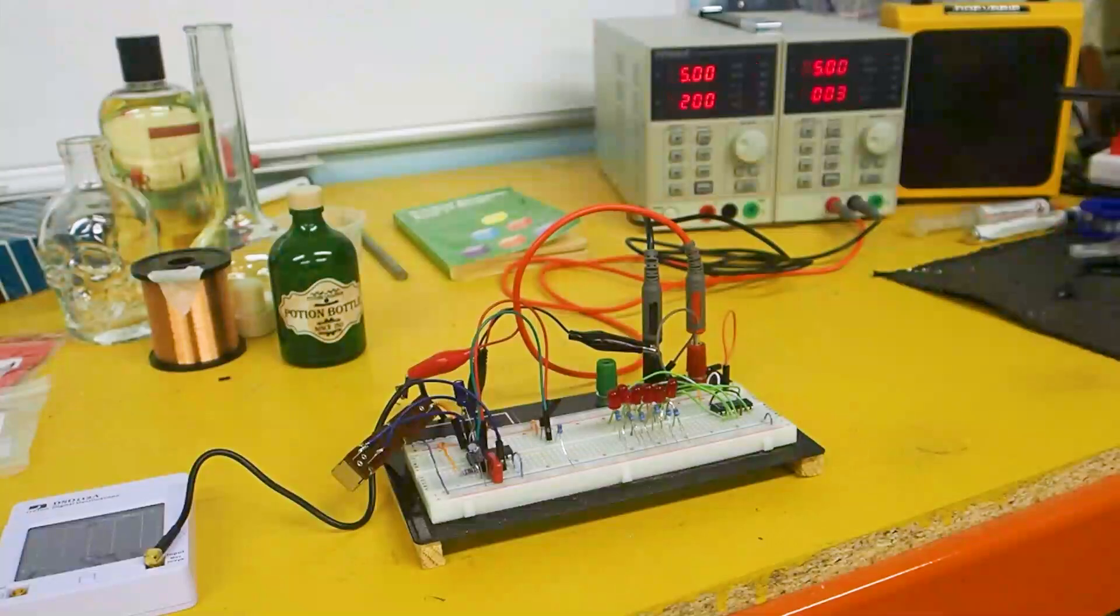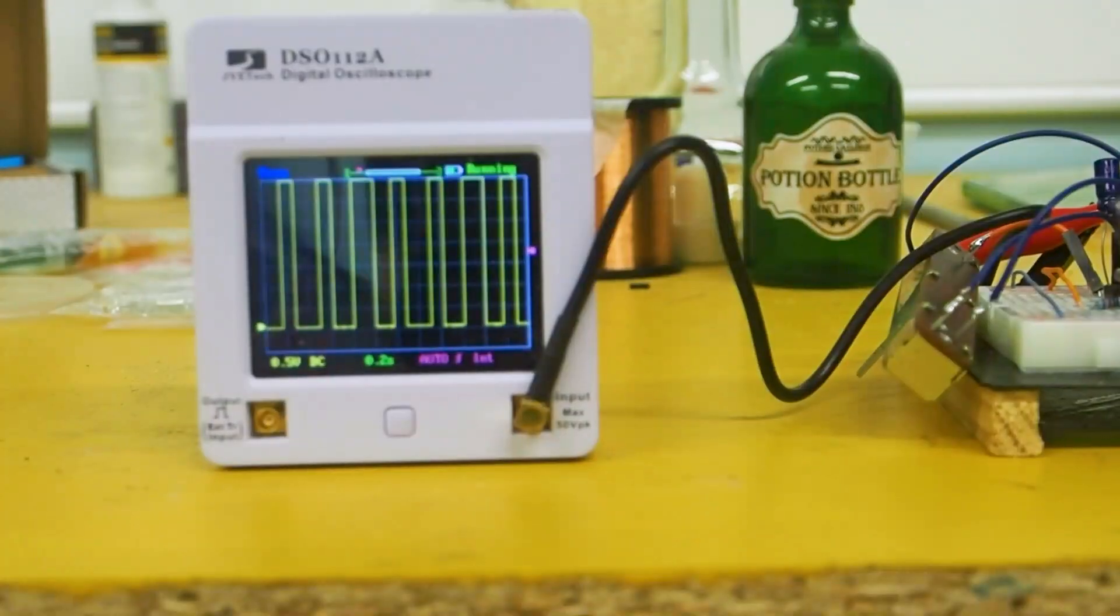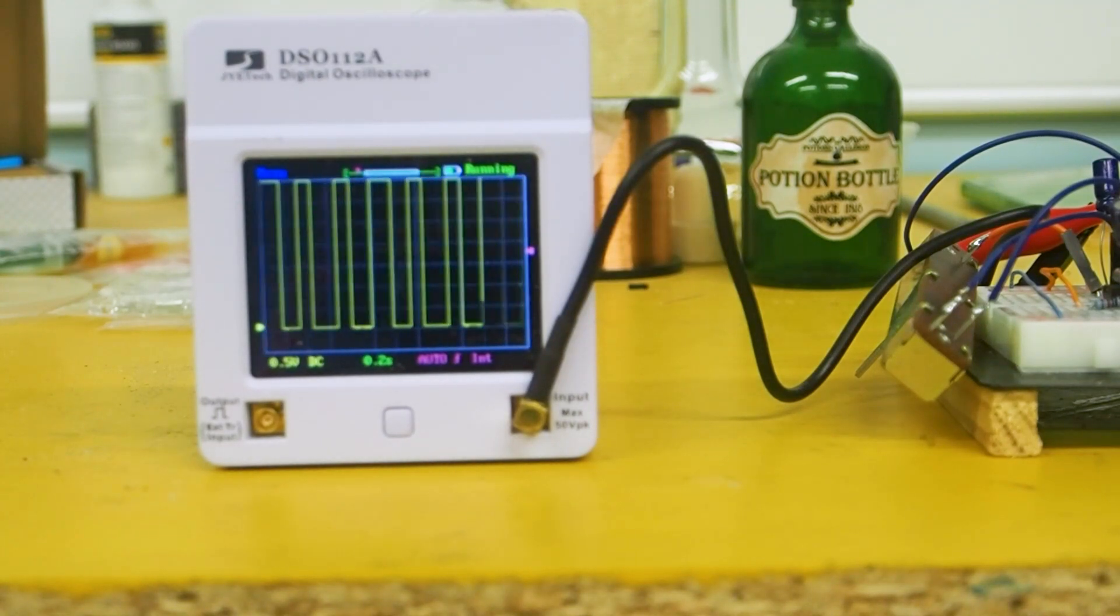It's going to connect across to the control input of the second 555 timer. And then if we have a look at the output of that timer, we can see how the frequency is varying depending on that sawtooth input.